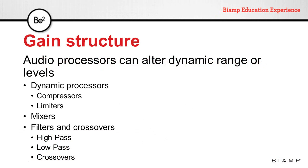When adjusting the gain structure of a system, we need to consider that dynamic processors like compressors and limiters, mixers, and filters and crossovers can alter the dynamic range or level of a signal. In such cases, it's necessary to adjust levels in order to maintain proper gain structure throughout the system.